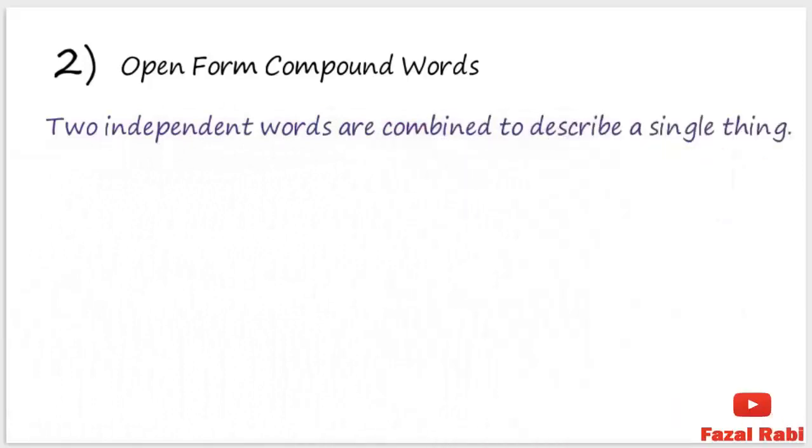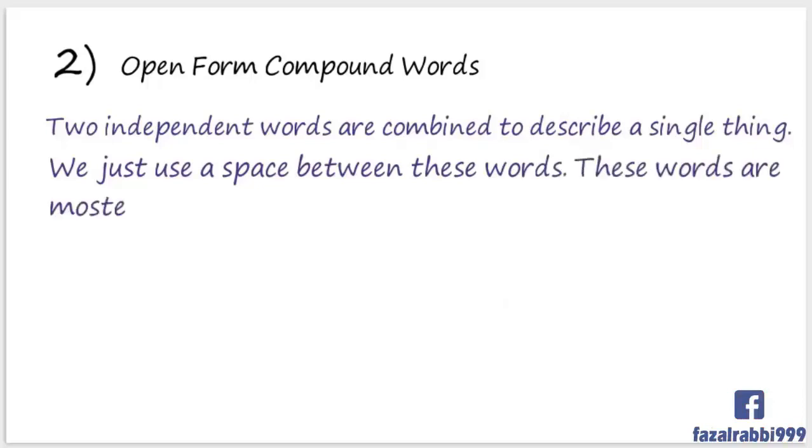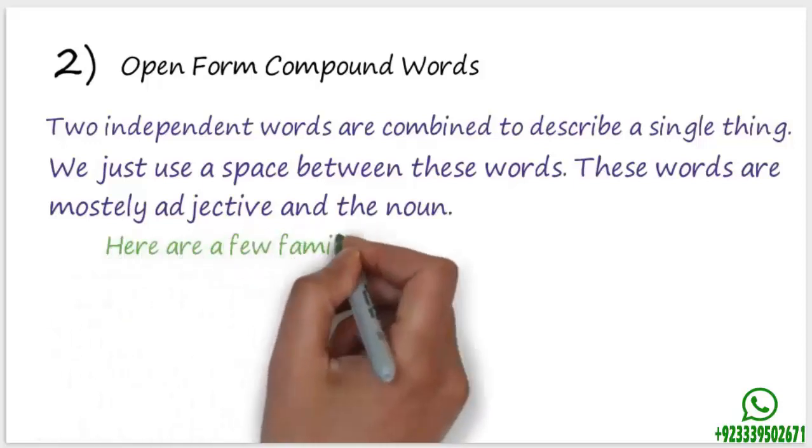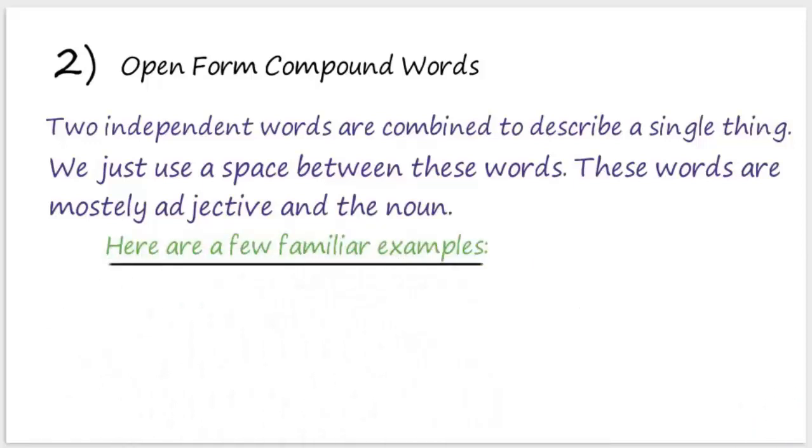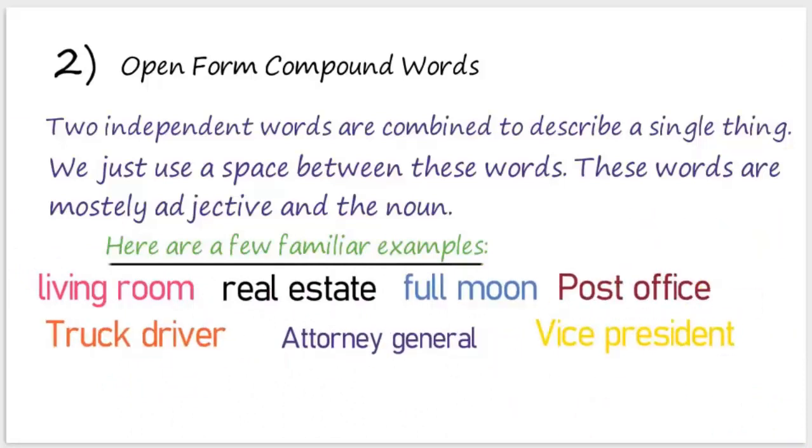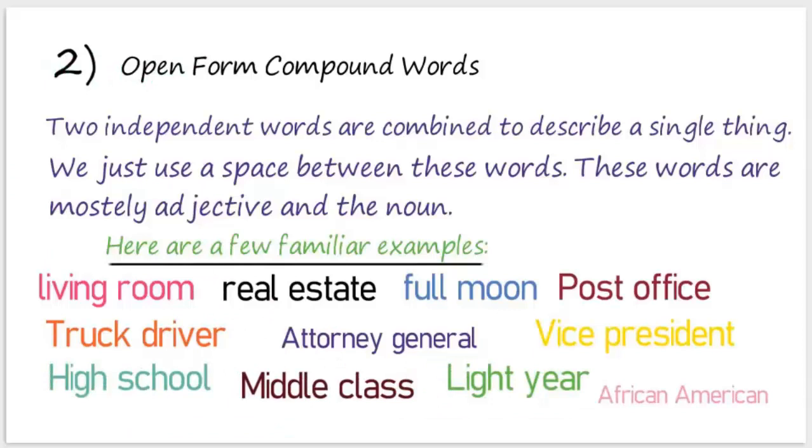words are combined to describe a single thing. We just use a space between these words. These words are mostly adjectives and nouns. Here are a few familiar examples: living room, full moon, truck driver, high school, light year, etc.